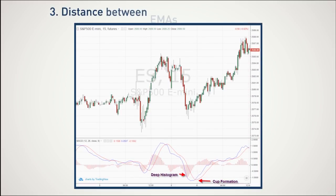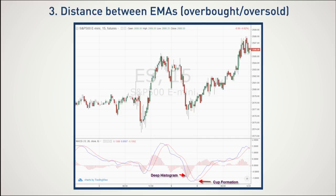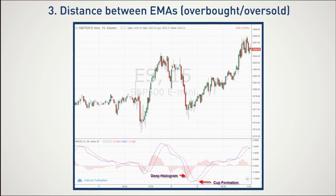Three: Distance Between EMAs, or oversold. The increased distance between the EMAs often leads to sharp rallies counter to the primary trend. These signals are visible on the chart as the cross made by the fast line will look like a teacup formation on the indicator.